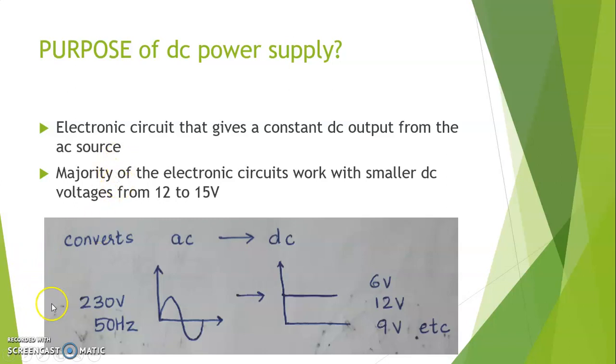The power source available to us is 230V 50Hz and this has to be converted to DC at a smaller voltage level so that small electronic circuits can work.